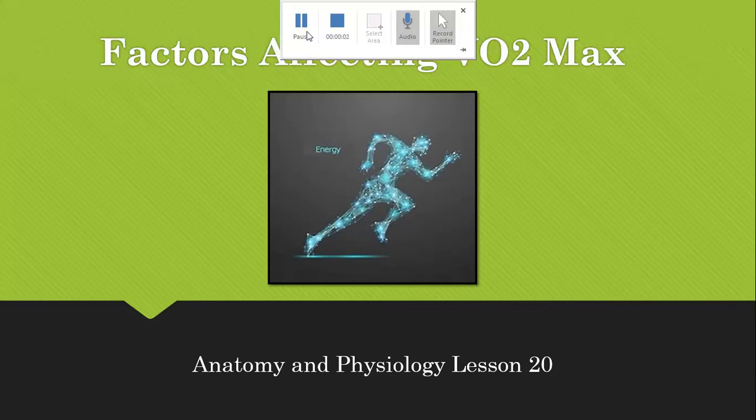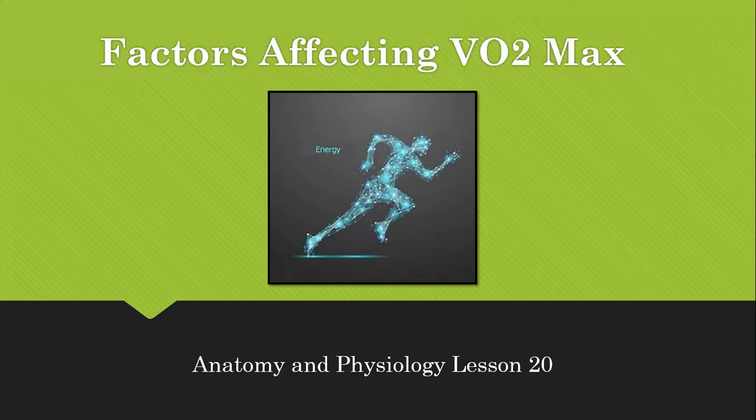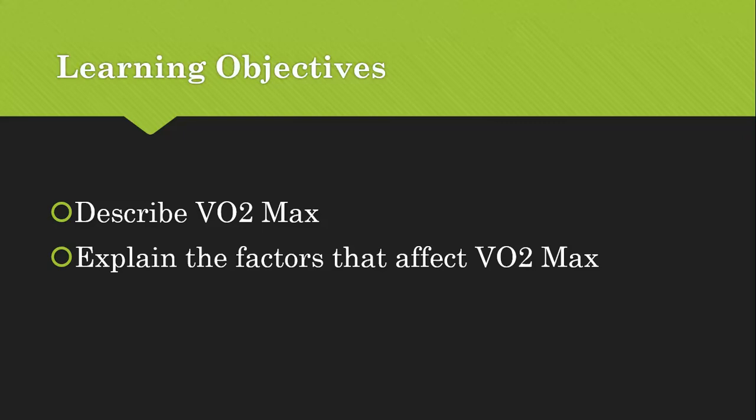This is Anatomy and Physiology Lesson 20 and we're looking at factors affecting VO2 max. Hopefully by the end of the lesson you'll be able to describe what VO2 max is — we've already looked at the definition briefly in previous videos — and hopefully you'll be able to explain the factors that affect a performer's VO2 max.